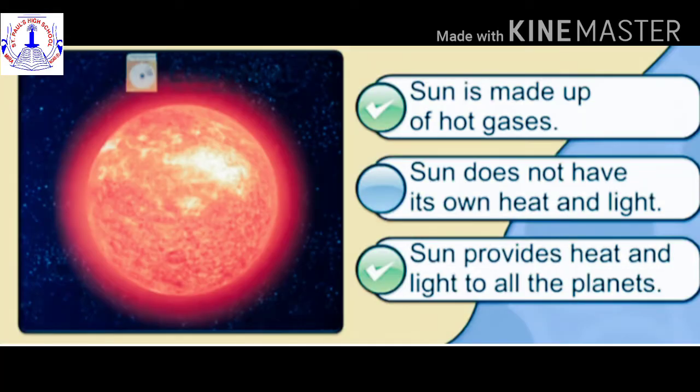Yes, the first and third options are correct. The first one is 'Sun is made up of hot gases,' and the third option is 'Sun provides heat and light to all the planets.' Good job, children! You have given the right answers. Now let's move on.